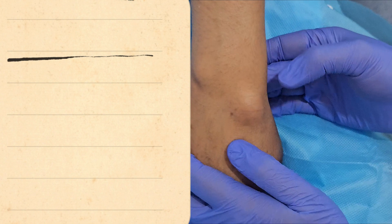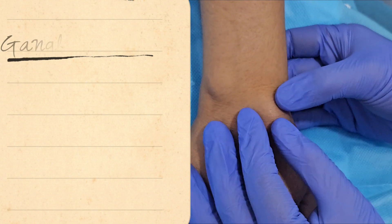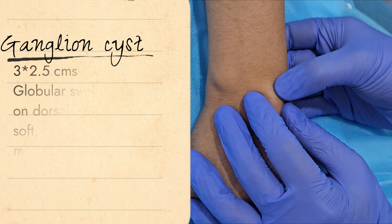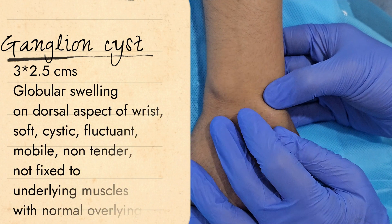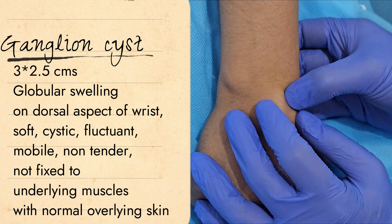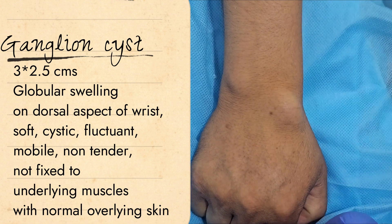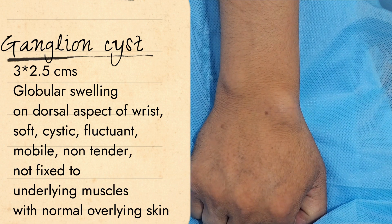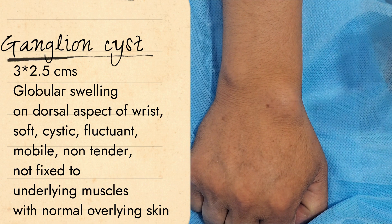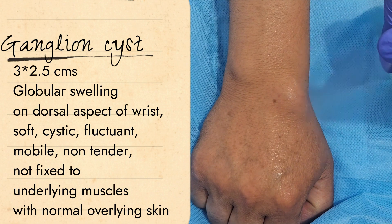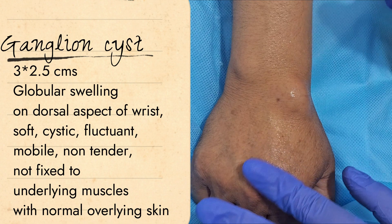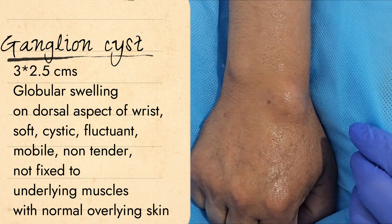A 35-year-old male patient presented with a swelling in his left wrist for the last six months. On examination, there was a 3 x 2.5 cm globular swelling which was soft, cystic, fluctuant, mobile, non-tender, and not fixed to any underlying muscles, with intact skin. This swelling became more prominent when the wrist was flexed. The patient was asymptomatic and came only for cosmetic concerns.